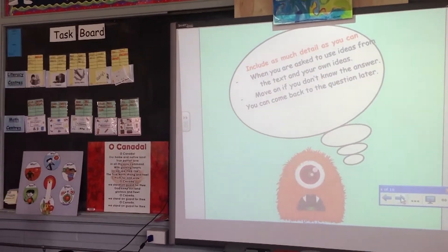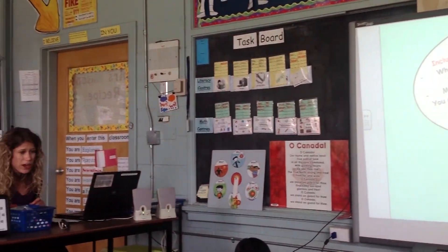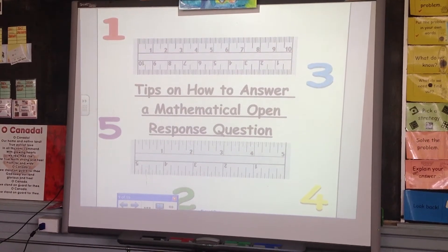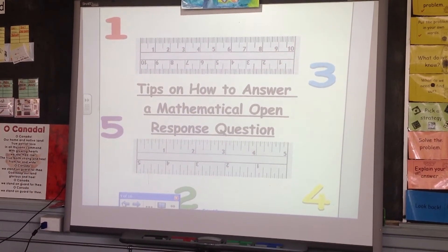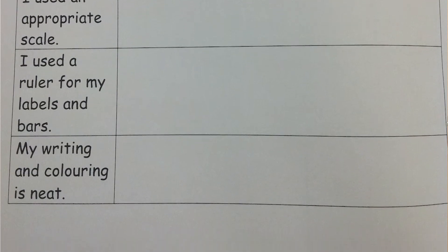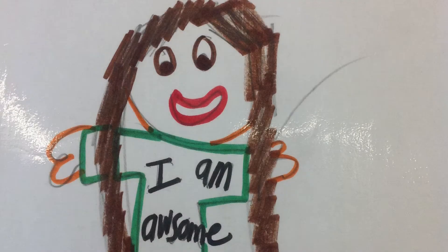We look at past EQAO tests and students get a chance to look at other responses and we talk about them. We write different genres that we've seen in past EQAO tests, we talk about ways to answer a multiple choice question, an open language response question, and strategies to answer an open math question. We talk about all of the EQAO terms like define, describe, compare — all of those throughout the year. In my assessment I use a lot of EQAO samples so that when students write the test they've already seen EQAO the entire year and it's not a surprise for them.